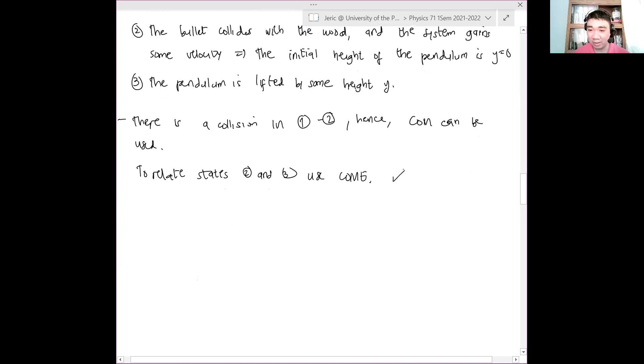Okay? So that's what we'll start with. Let's first do this. So let V2 be the velocity of the pendulum initially. Pendulum here is the combined, is the wood plus the bullet.